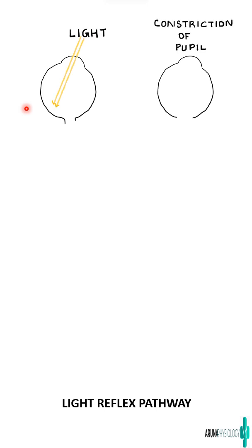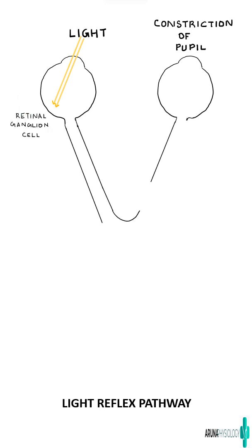When light falls on one eye, the information is passed on via the retinal ganglion cells, the axons of which form the optic nerve.